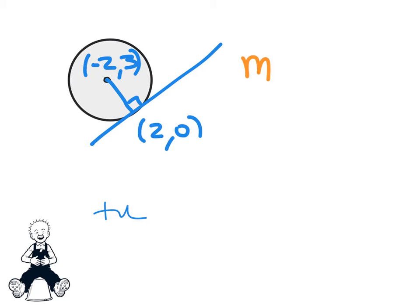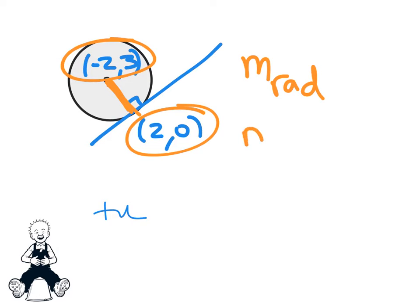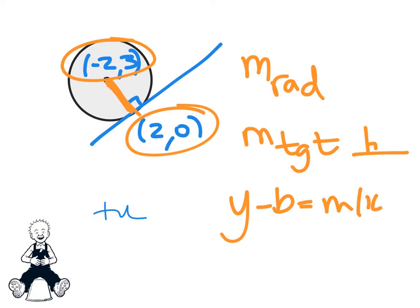Sorry, let me fix that. First thing you're going to get is the gradient of the radius, the orange line, and we know the two points so we can use the gradient formula. Then we're going to get the gradient of the tangent, which is perpendicular, and then we're going to use y minus b equals mx minus a.